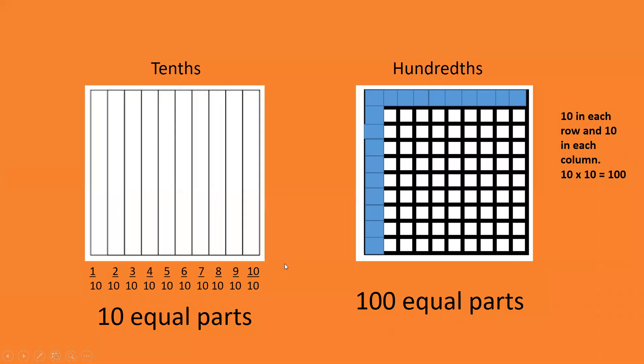On the left we've got tenths, on the right we've got hundredths. If we look, we've got 10 equal parts at the tenths. And each part is worth one tenth.